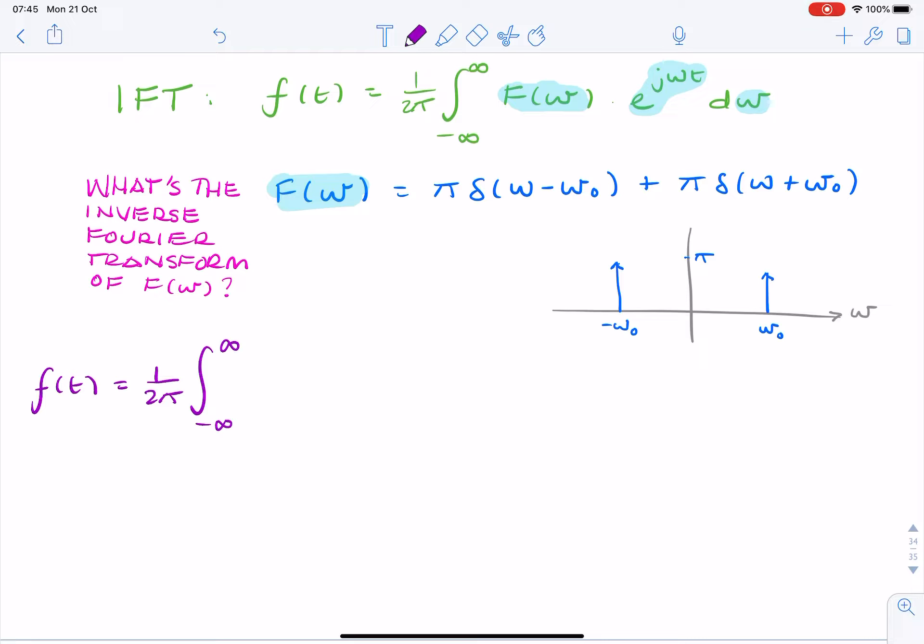And I'm going to replace f of omega with the expression that we're given. So that's pi times an impulse at omega minus omega nought plus pi and impulse omega plus omega nought e to the j omega t d omega. Remember, I'm integrating over frequency, not over time. So that's important.